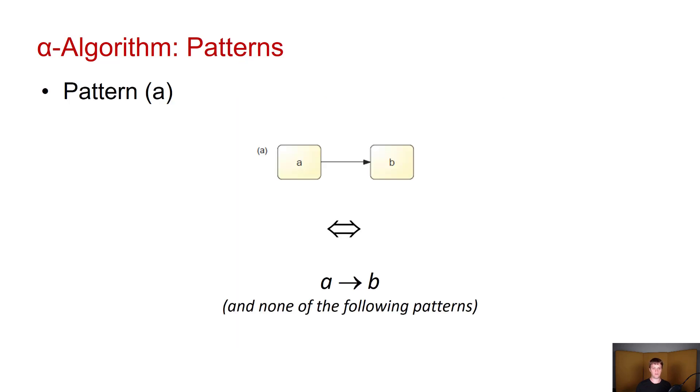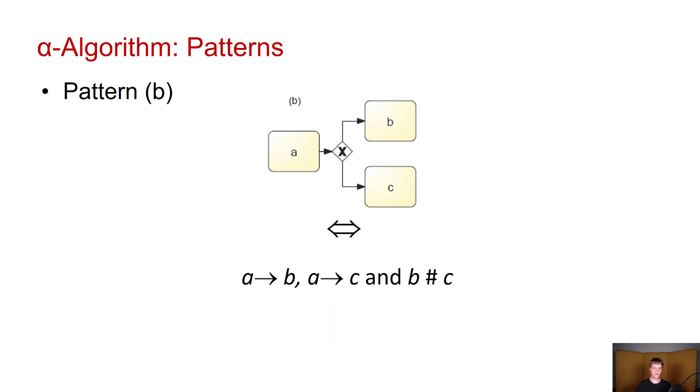The first of those is a simple direct succession. And this is going to be used when you have a direct succession from A to B and none of the following patterns hold. So what are the following patterns? We have A is directly succeeded by B. A is directly succeeded by C. And B and C do not occur in parallel. In this case we put an XOR split between those activities as shown here.